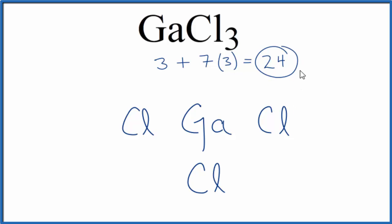So we have 24 total valence electrons for this GaCl3, gallium trichloride. We'll put a pair of electrons between the atoms. That'll form the chemical bond. At this point, we've used six. Remember, we have a total of 24.